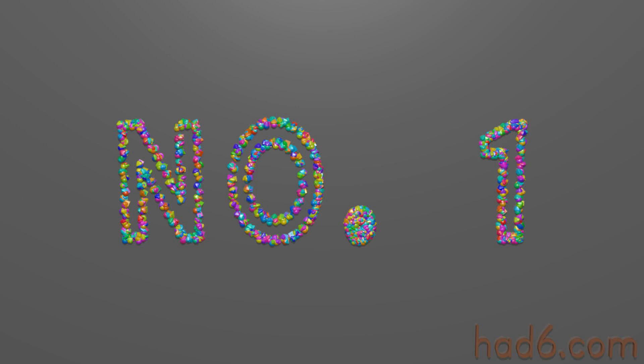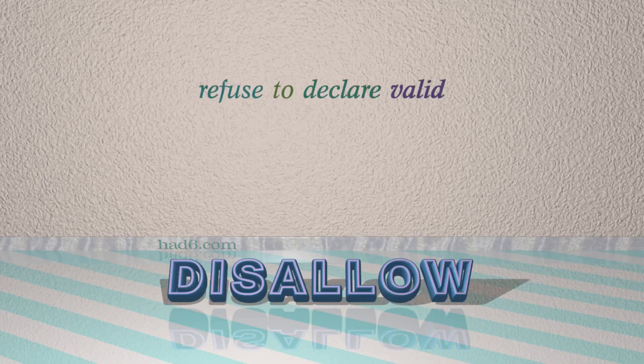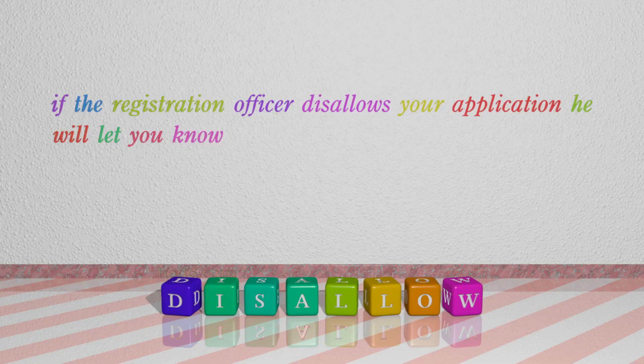Number 1: Disallow. Which means refuse to declare valid. For example: If the registration officer disallows your application, he will let you know.